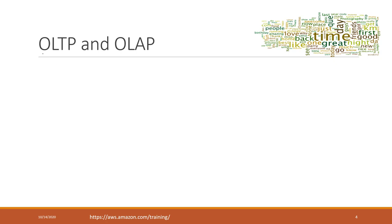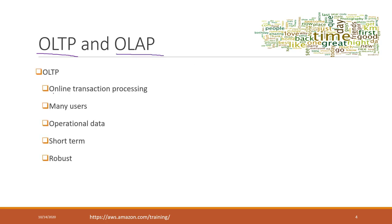There are two types of data analytics. One is called OLTP and the other is called OLAP. OLTP stands for Online Transaction Processing, which normally involves a lot of users and is used to save operational data.